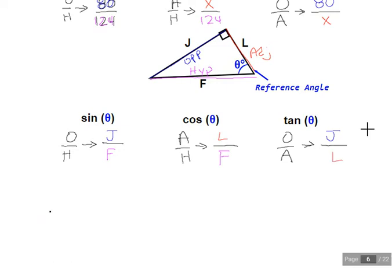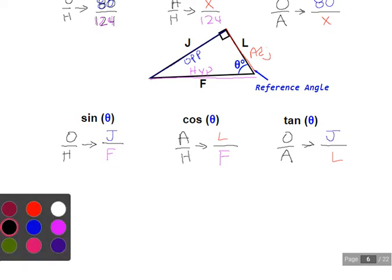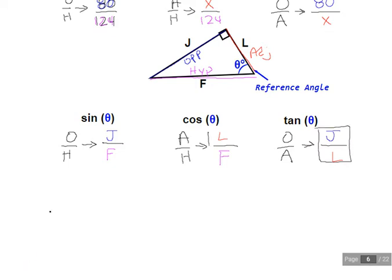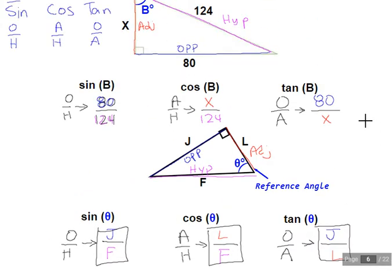Now, again, we're not being asked to simplify. We're not being asked to solve. We're just being asked to produce the values. And so just for clarification's sake, the values I'm looking for are going to be these ratios. So 80 over 124, X over 124, and 80 over X.